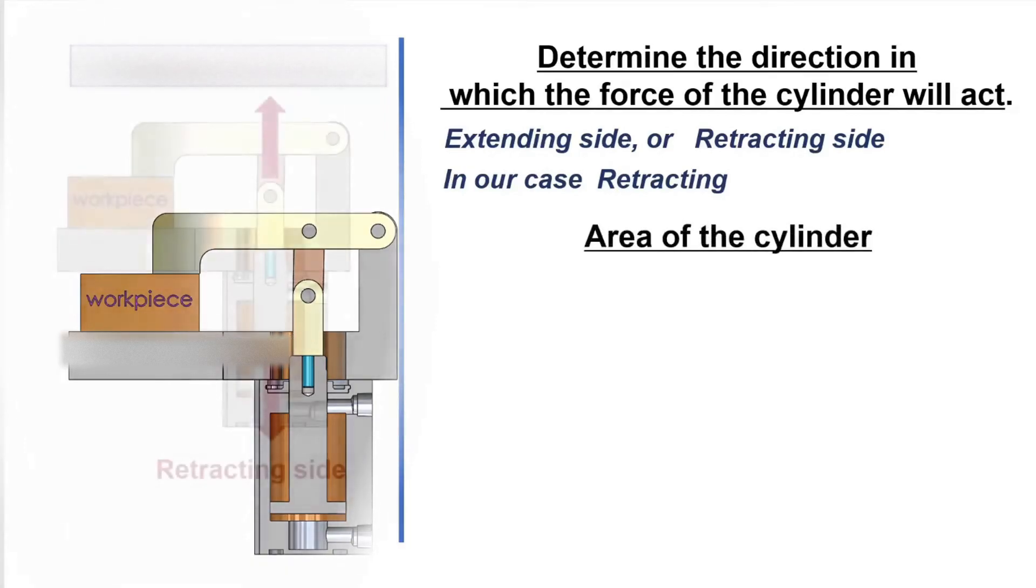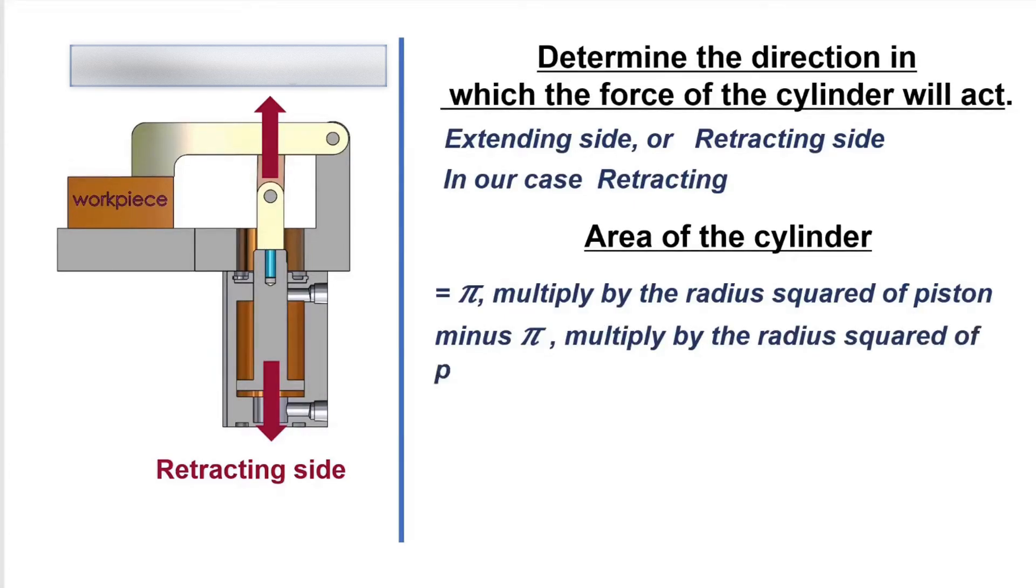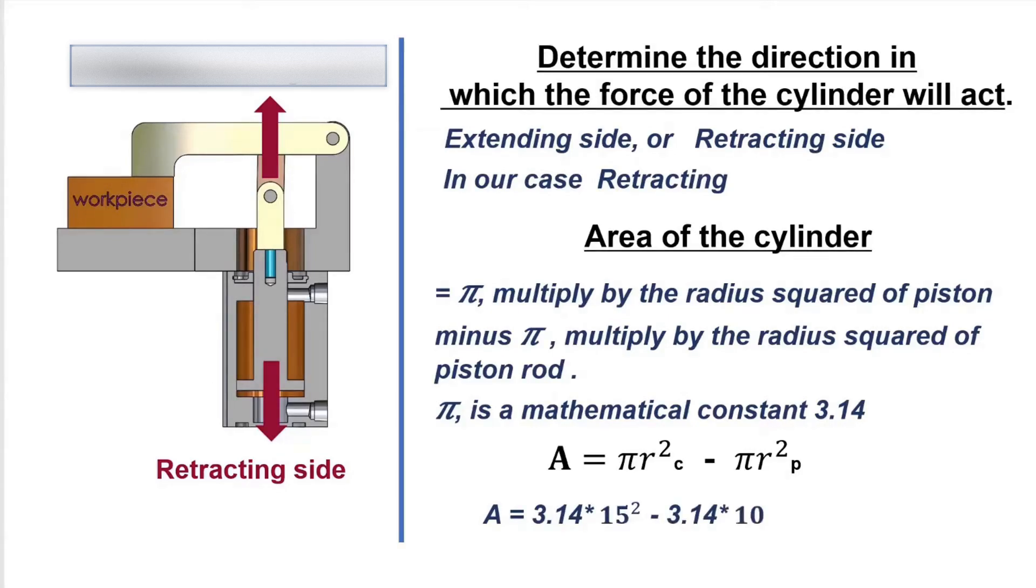Now let's define the area of the cylinder. The area of the cylinder for retracting equals pi multiply by the radius squared of piston minus pi multiply by the radius squared of piston rod. Pi is a mathematical constant, 3.14. Area of the cylinder equals 392.5 millimeters squared.